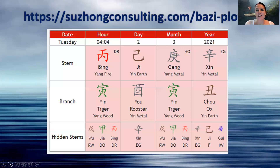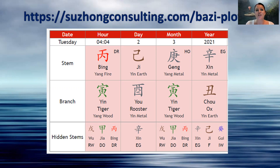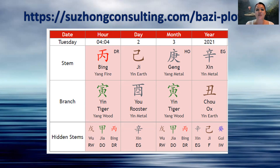First, you need to check whether or not you have the rooster anywhere in your Bazi chart. You can do that by plotting your chart with this link. I'm also putting the link in the notes to this video. Just copy, paste, then enter your date and time of birth and you will get this particular chart. We're focusing on the pink part. There will be other parts there in the full chart, but this is what we're focusing on.